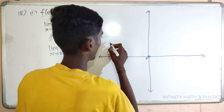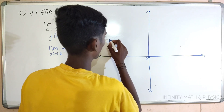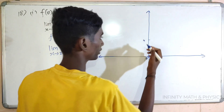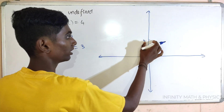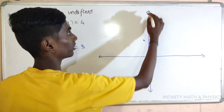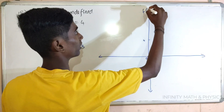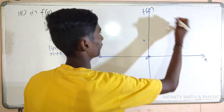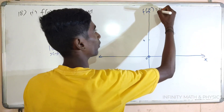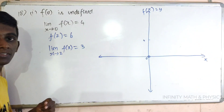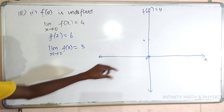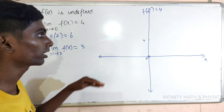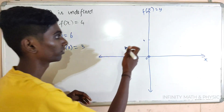If we put a line, we put it at 4. This is the function, this is f of x, this is x, this is y. If you do left side and right side, then 4 is the limit value.